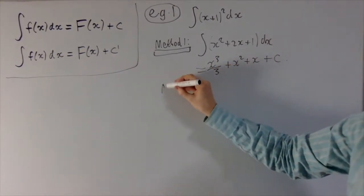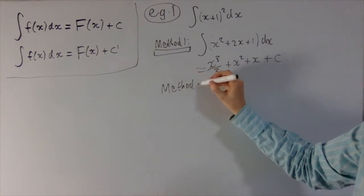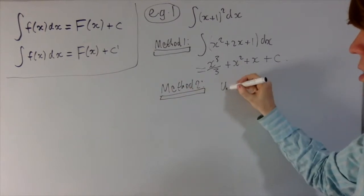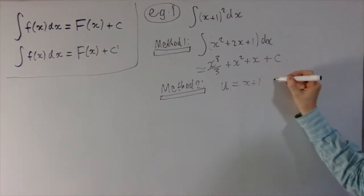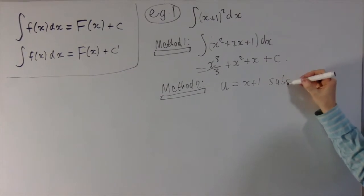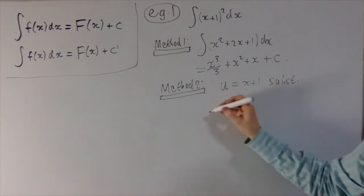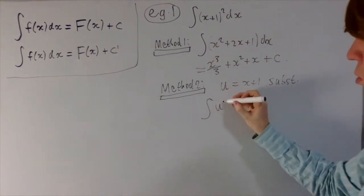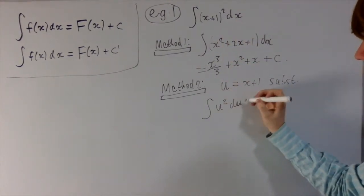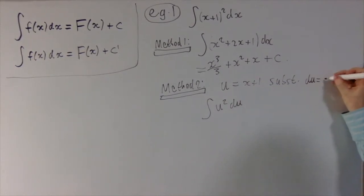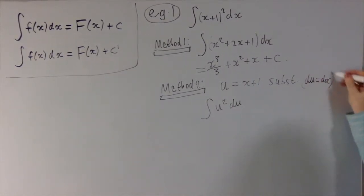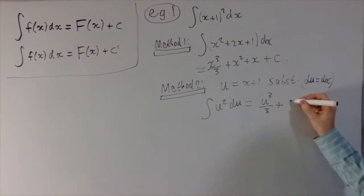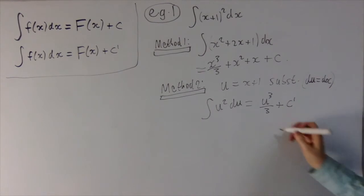Next we'll use a slightly different method — we'll use a substitution. So u equals x plus 1. This turns our integral into u squared du, since du equals dx. And then this becomes u cubed over 3 plus some other constant c dash.